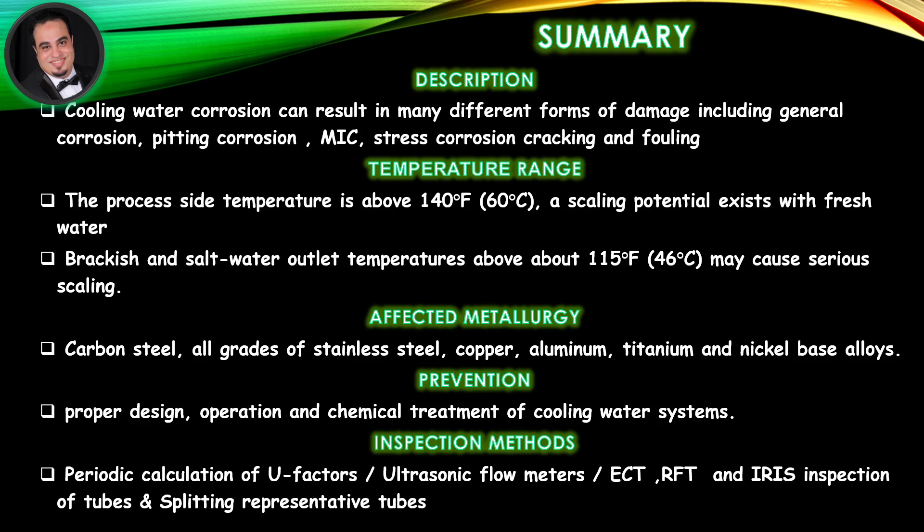Affected metallurgy includes carbon steel, all grades of stainless steel, copper, aluminum, titanium, and nickel base alloys. Prevention involves proper design, operation, and chemical treatment of cooling water systems. Inspection methods include periodic calculation of U-factors, ultrasonic flow meters, ECT-RFT, IRIS inspection of tubes, and splitting representative tubes.